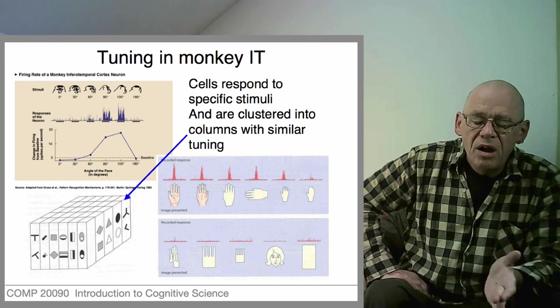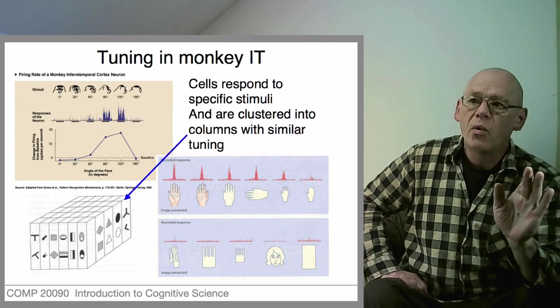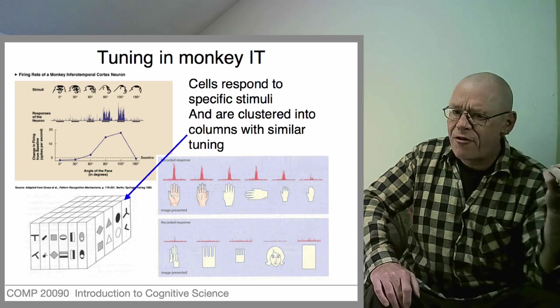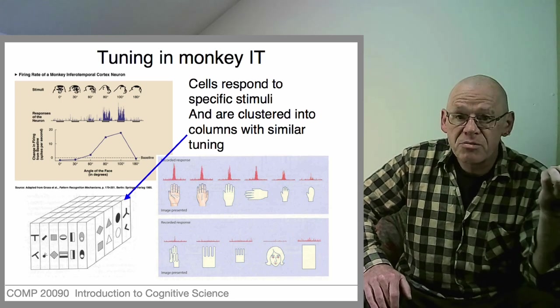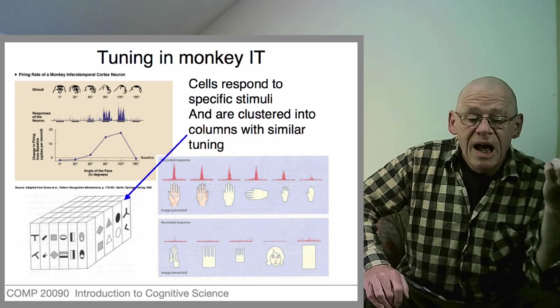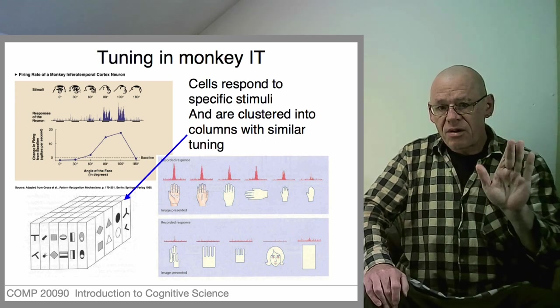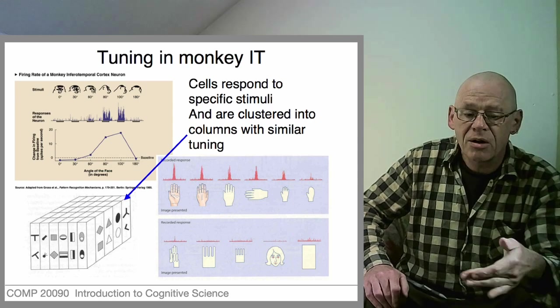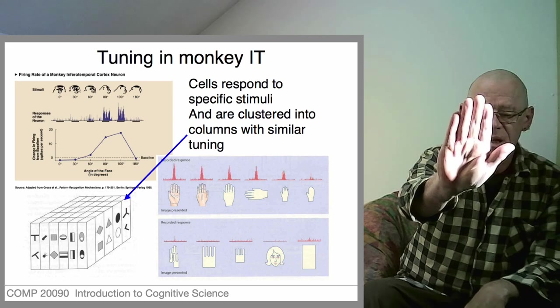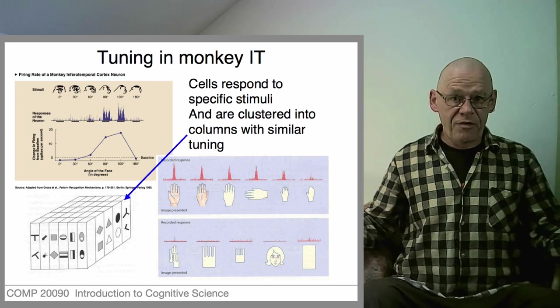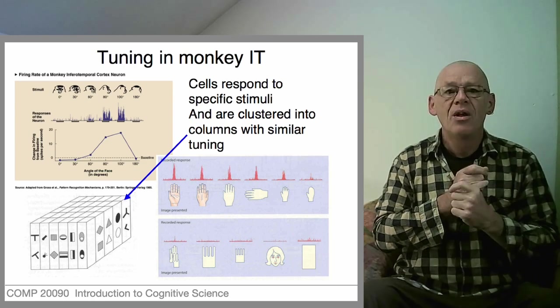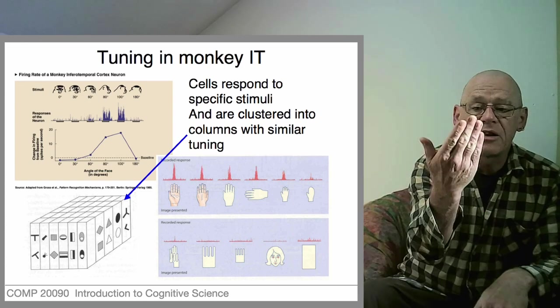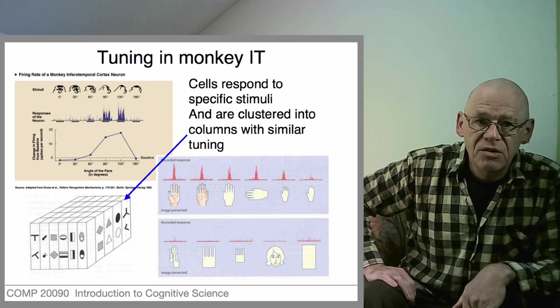Down on the bottom right you see results from a different experiment, different monkey. Once more an electrode is introduced and we go fishing. We show it bananas and everything under the sun until we find something that this cell responds to. This cell was found to be responsive to looking at hands. When the hand was presented like this, the cell became very active. So this is responding to a cell. Once we find that, we can start changing what we show to the monkey and see does the cell still respond.